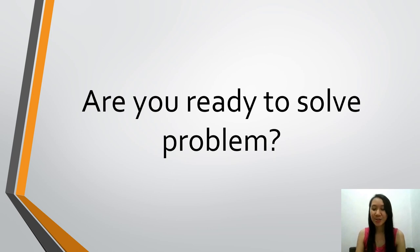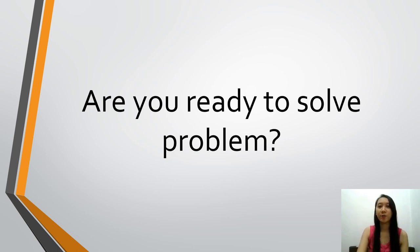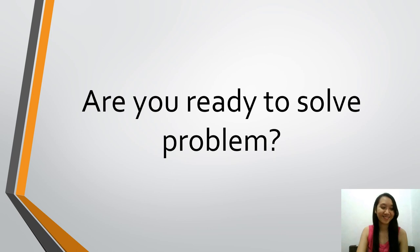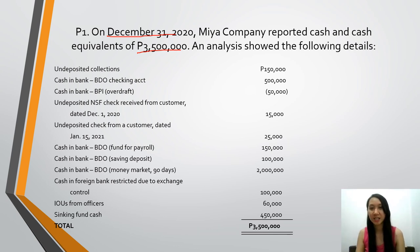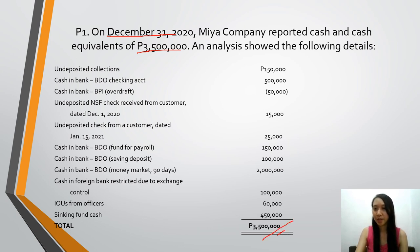Are you ready to solve problems? Let's try to apply what we've learned from the cash and cash equivalents videos. Let's start by solving problem number one. On December 31, 2020, a company reported cash and cash equivalents of 3,500,000, and analysis showed the following details visible on screen. The question is: is this 3,500,000 really all cash? Is everything listed here truly part of cash and cash equivalents?